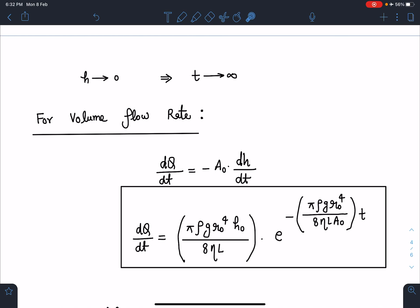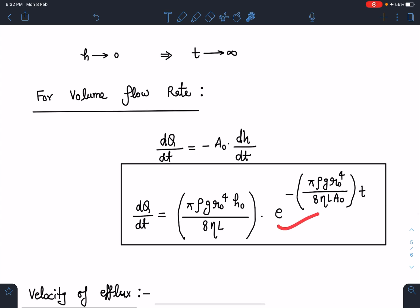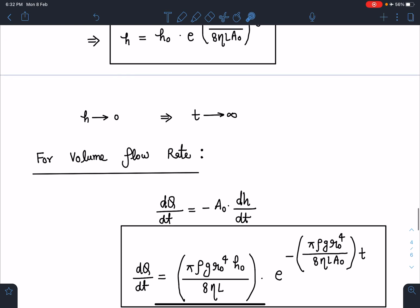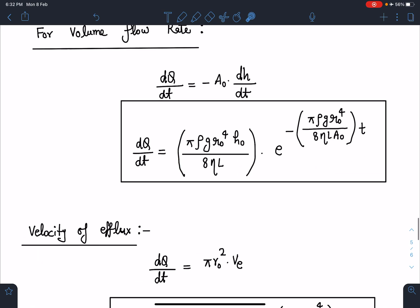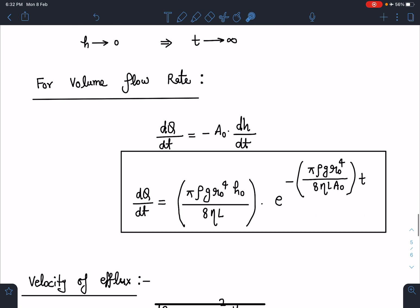Which is decreasing exponentially, so volume flow rate is maximum at the initial instant and then it becomes zero finally after infinite times. The dh/dt value I think you can easily differentiate and substitute. This is what we are going to get after differentiation.